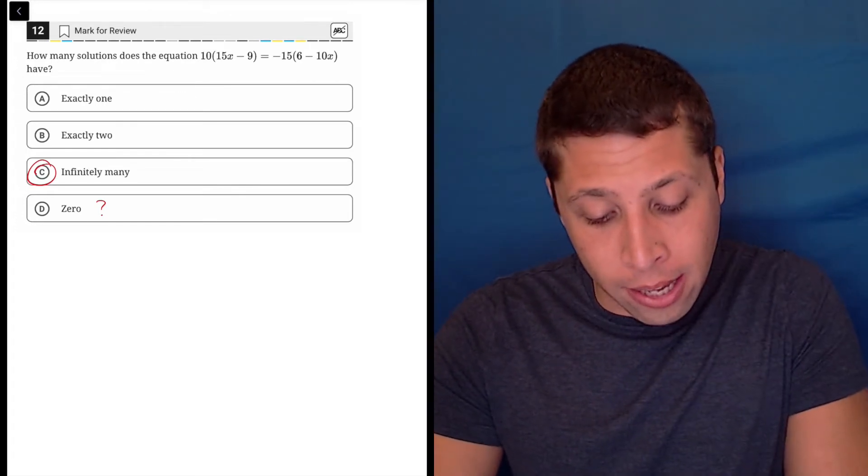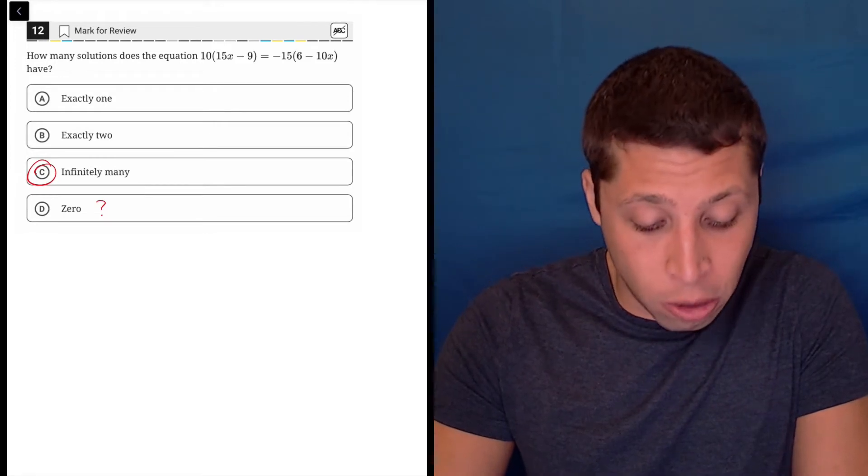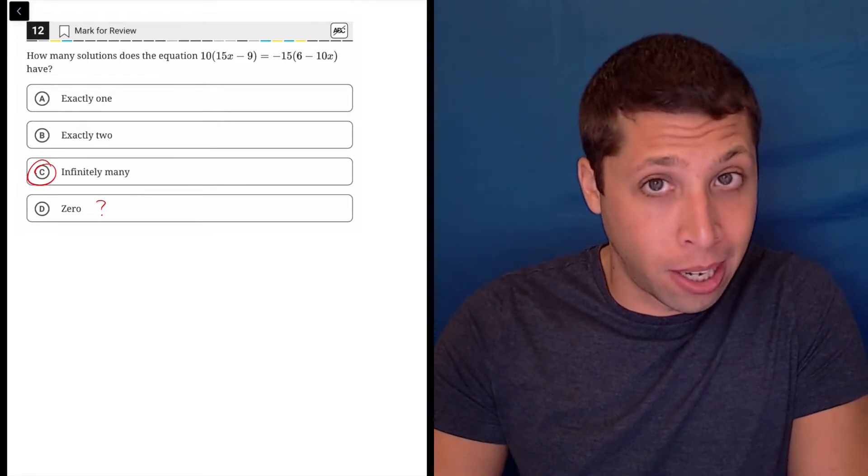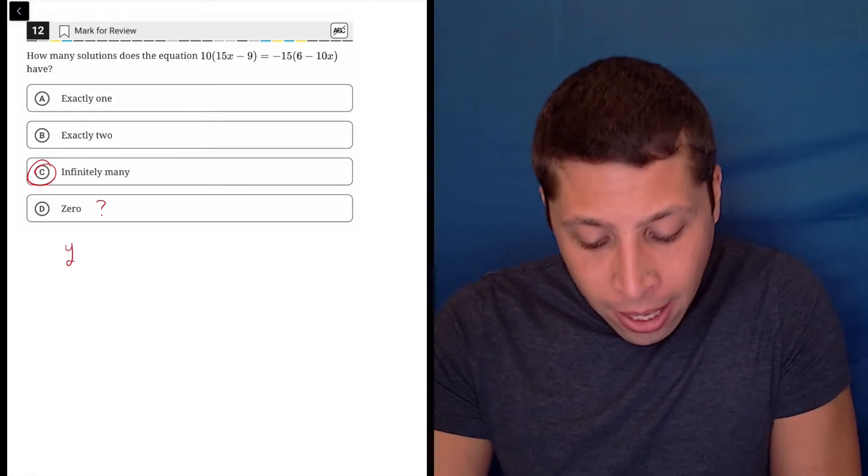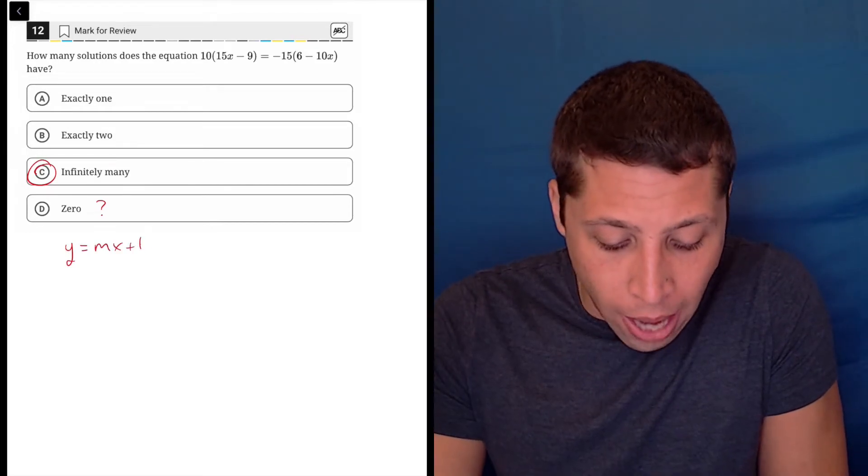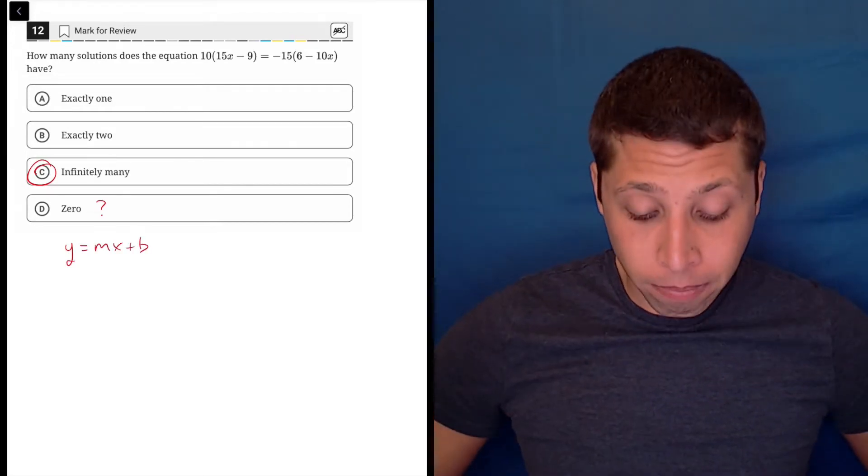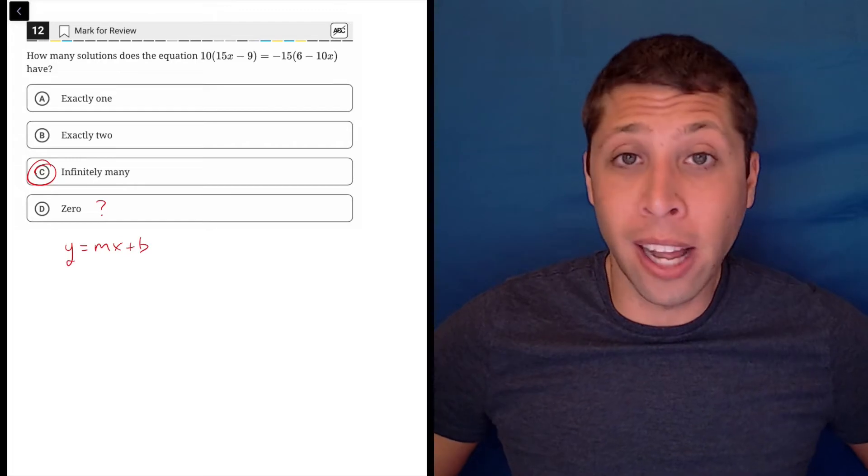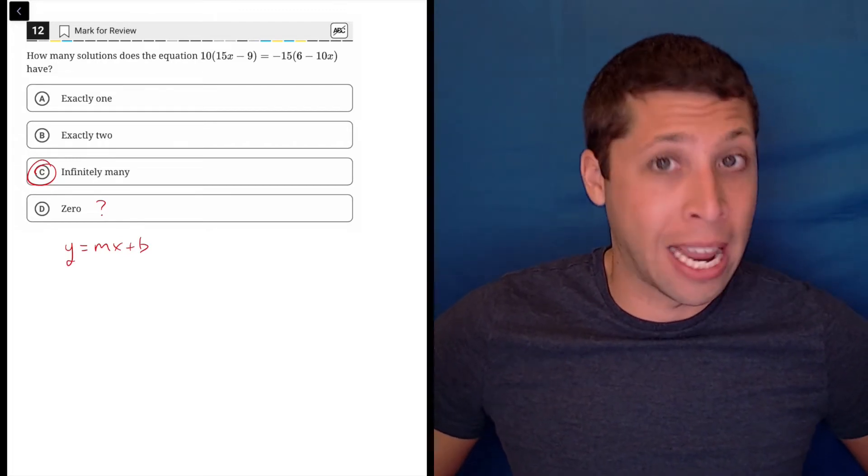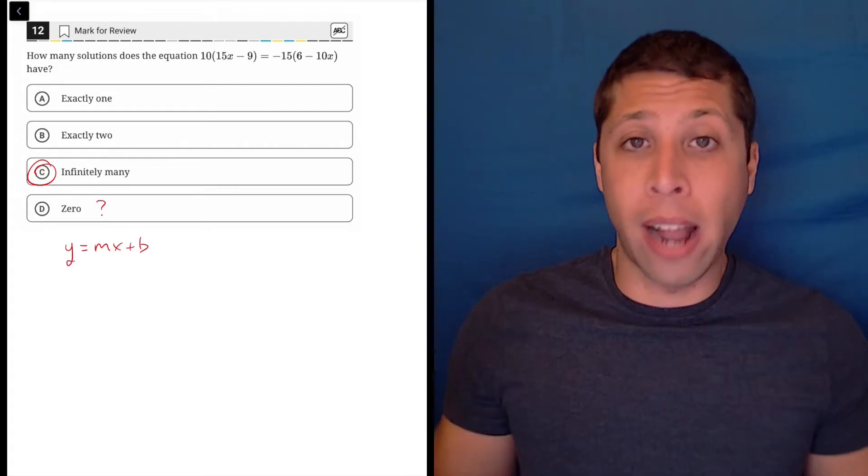What we do have here is no x squared. So these are basically kind of set up for us as lines. And when I think about lines, I think about y equals mx plus b. And luckily, lines are very simple. There's not much that can happen.